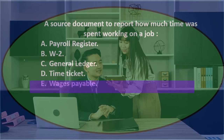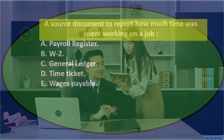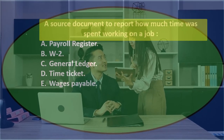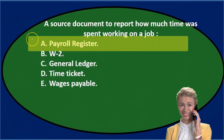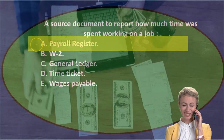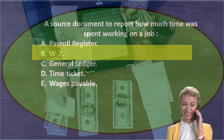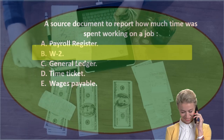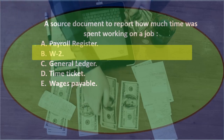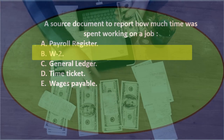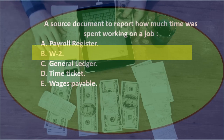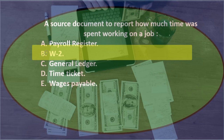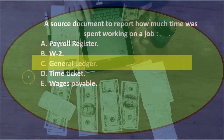Let's go through this using the process of elimination. A source document to report how much time was spent working on a job. A) payroll register — that might sound familiar if we're dealing with payroll, so I'll keep that for now. B) W-2 — that's going to report wages not for a specific job, but for an individual employee's wages and withholdings, so it's not B.